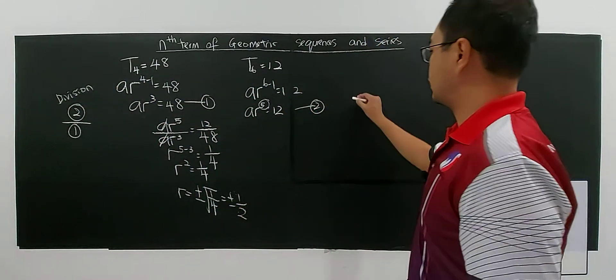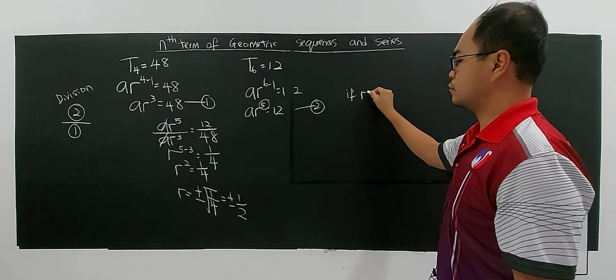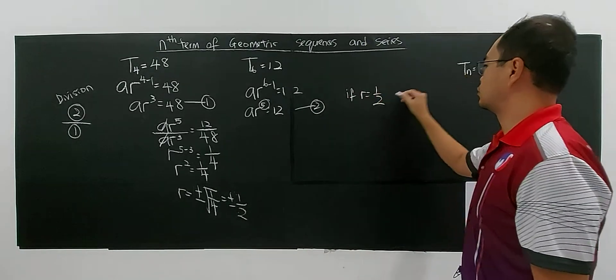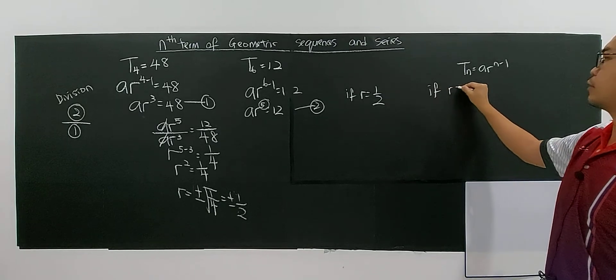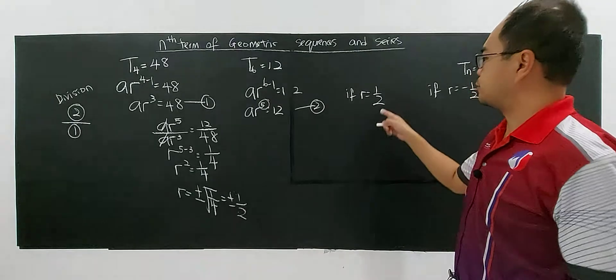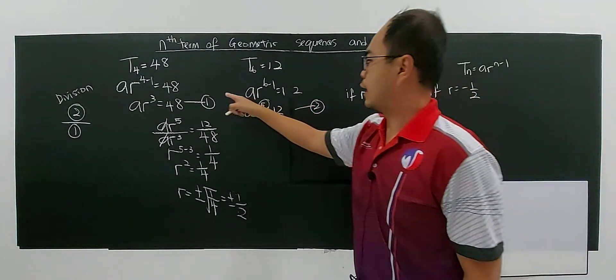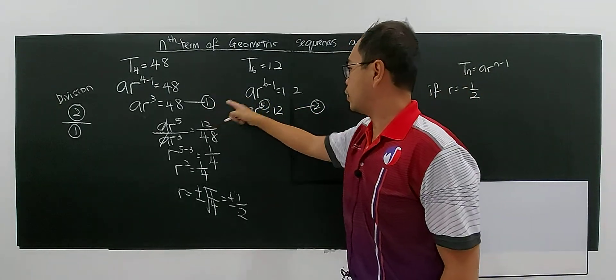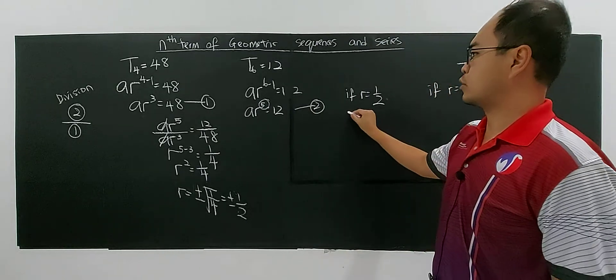If you have 2 possible values of r, there must be 2 possible values of the first term. If r = 1/2, or if r = -1/2. You can substitute this value of r into either equation 1 or 2.